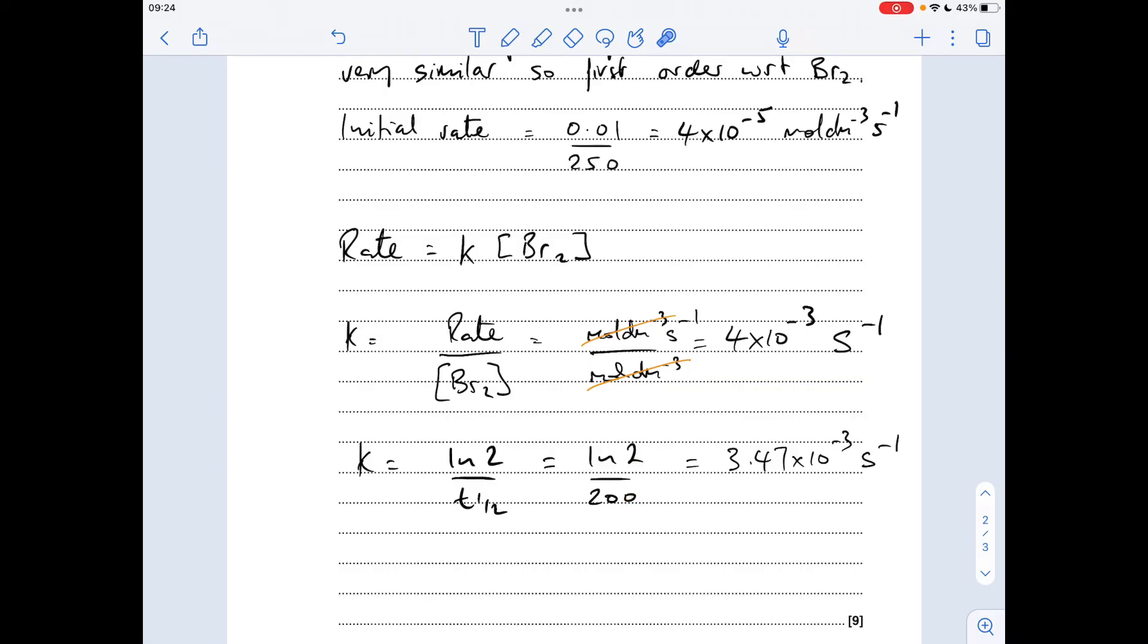So ln 2 over 200 gives me that value for K. You can see it's similar to that. Obviously the unit is still going to be seconds to minus 1. And just beware that the ln 2 over t half method is only applicable to first order reactions.